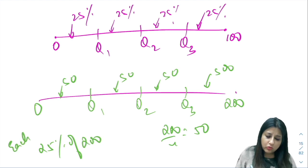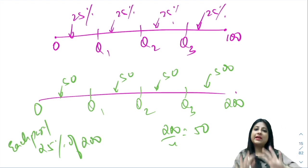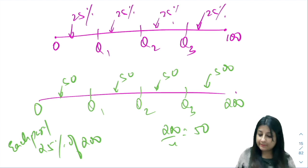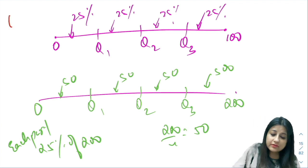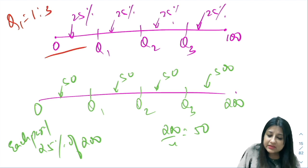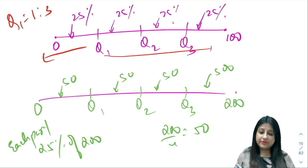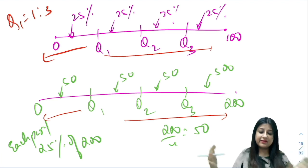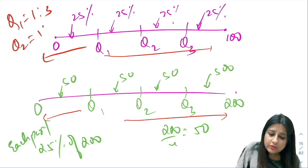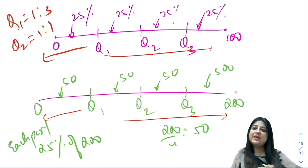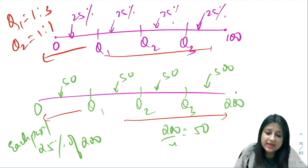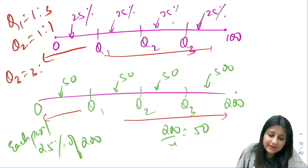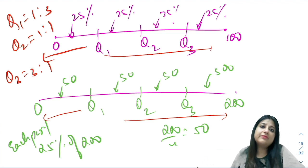Whenever you talk about Q1, Q1 is always going to divide my data set into one is to three - that means one part below and three parts above, or 25% below, 75% above. Q2 is always exactly 50%, half is below, half is above. Q3 is three parts below and one part above, so 75% below and 25% above.